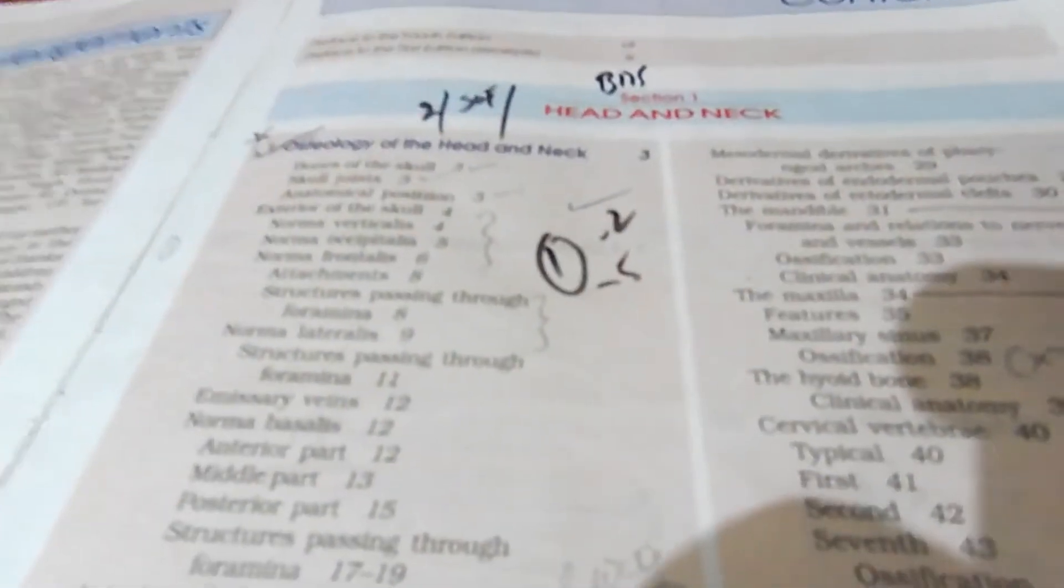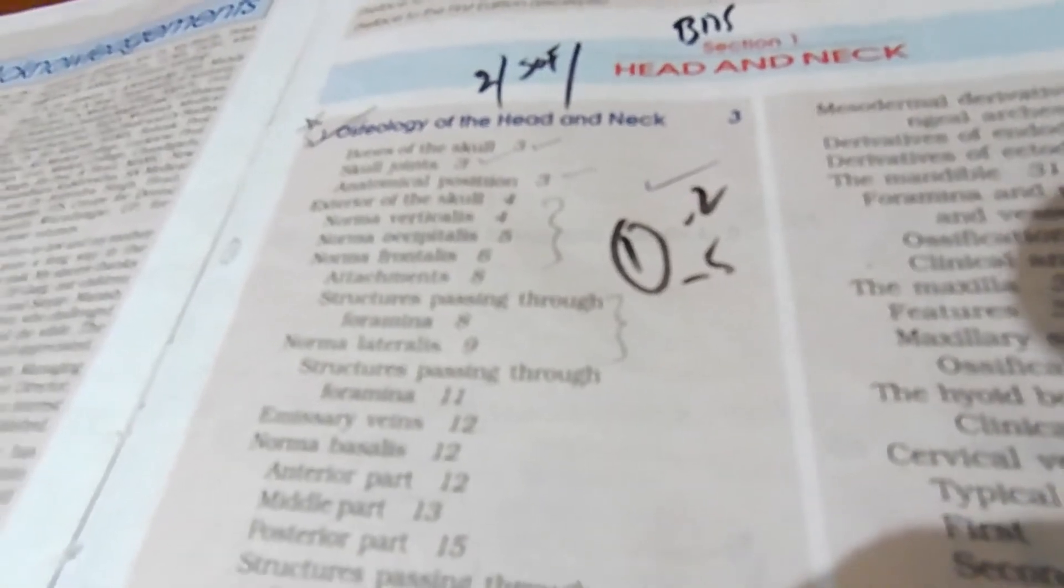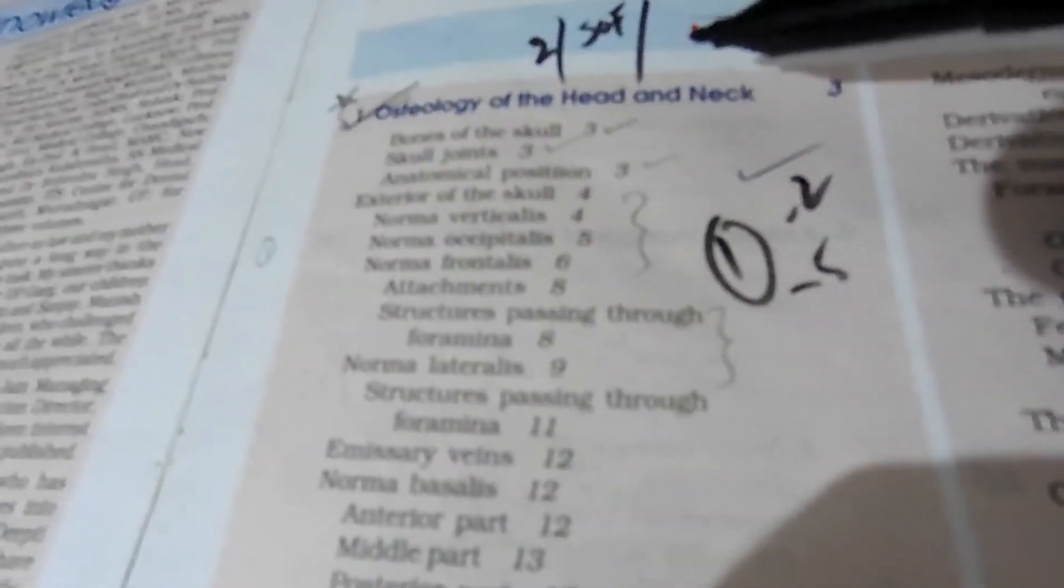This is the last series for BPD students for the head and neck portion. Head and neck is quite easy compared to others except for neuroanatomy. In the osteology app, nothing else except the two marks question on structures passing through the foraminas. Sometimes atlas and axis as osteology may come for five marks.